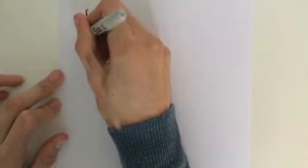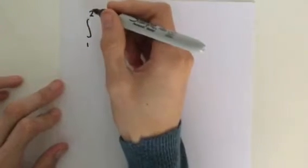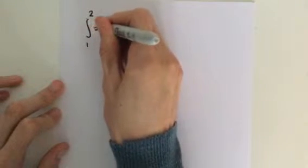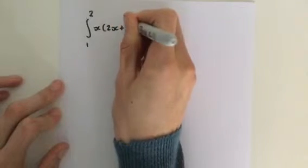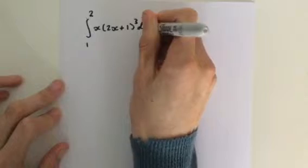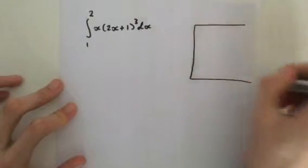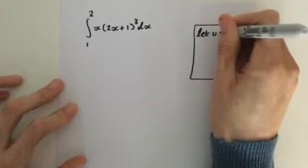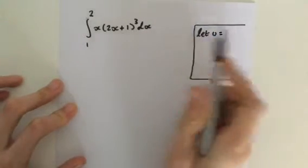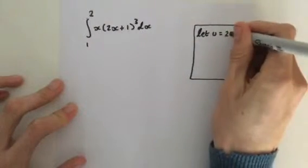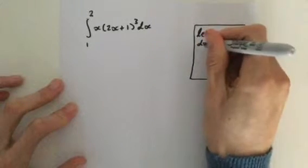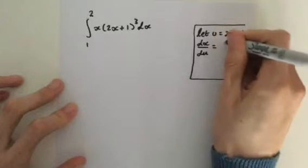Now we're going to look at integrals that are definite. Definite integrals, meaning we have boundaries. For instance, let's integrate from 1 to 2 of the function x multiplied by 2x plus 1 to the power 3 — a nice easy integral. As normal, we pick our u. Let u equal 2x plus 1. Therefore dx by du is going to equal a half.